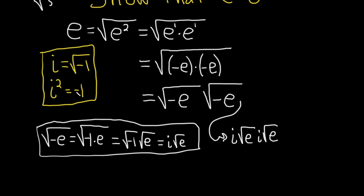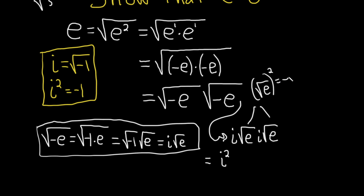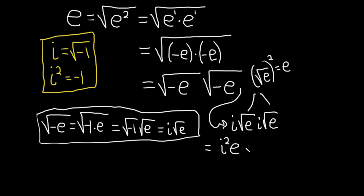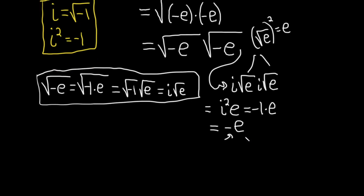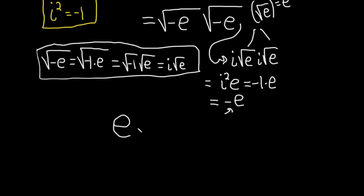So i times i is i squared. And the square root of e times the square root of e is the square root of e squared, which is just e. So this is i squared times e. And i squared is negative 1, so this is negative 1 times e, which is negative e. So we have that e is equal to negative e.